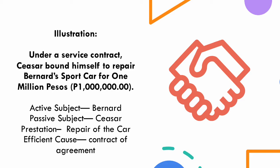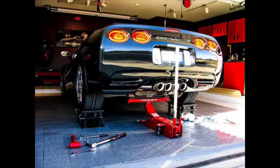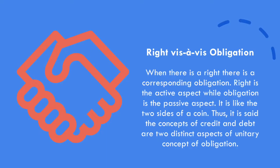Suppose Cesar already repaired the car and it was agreed that Bernard would pay Cesar after the repair is finished. Is there a change in the passive and active subject? The answer is yes. In this case, Cesar now becomes the active subject — the one who demands performance of the obligation, that is, the payment of the agreed consideration of 1 million pesos. Bernard now becomes the passive subject, the one bound to perform the prestation, that is, to give the payment of 1 million pesos.